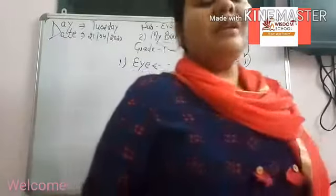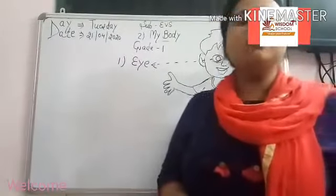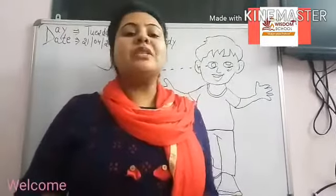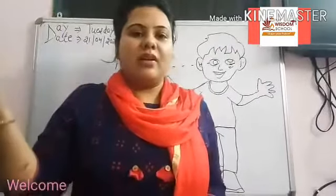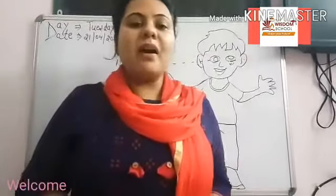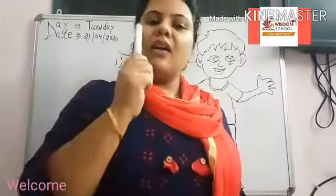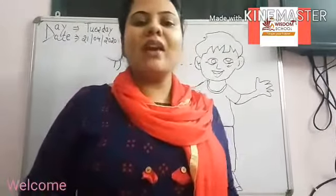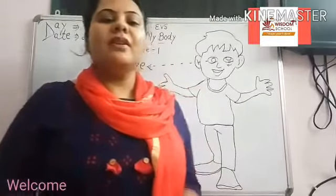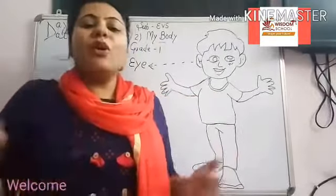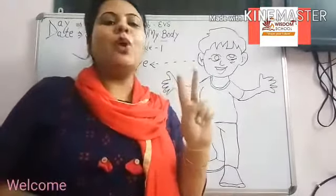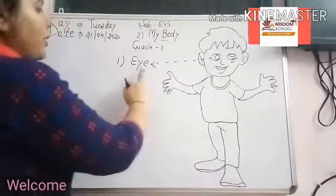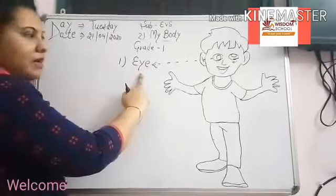You see the things around you. You see this beautiful world. By which body part? Your eyes. How many eyes do you have? We all have two eyes. So eyes are our body part.